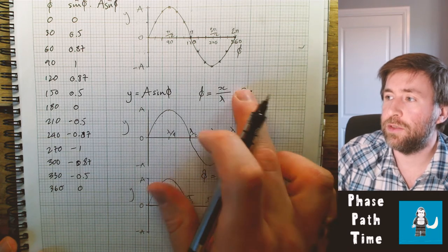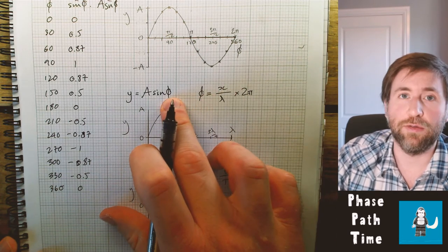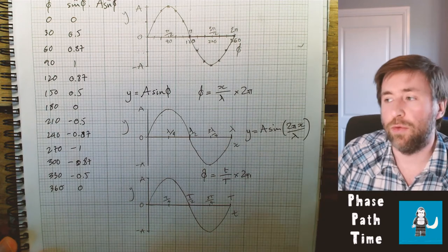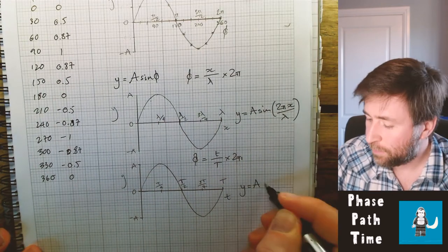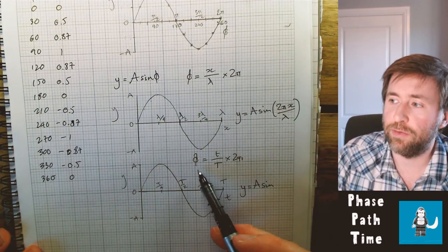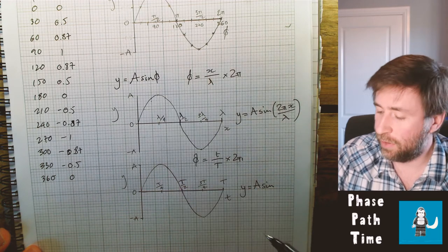And if I want to write an equation for this graph, just substitute my expression for phase into this graph here.